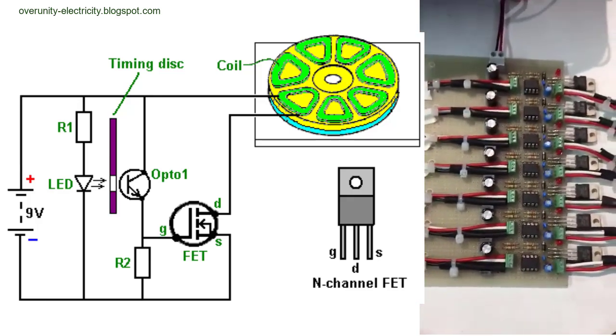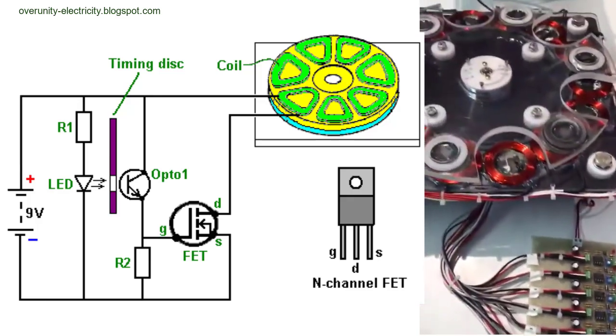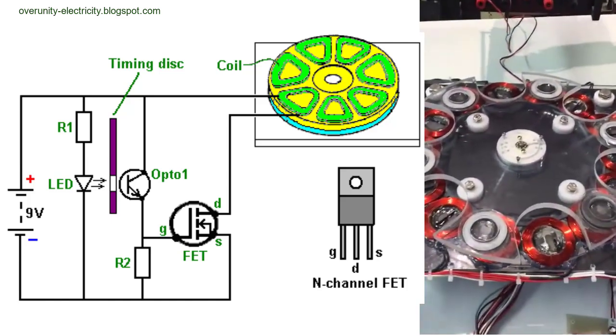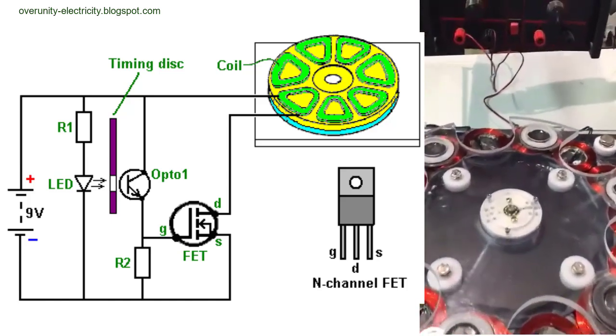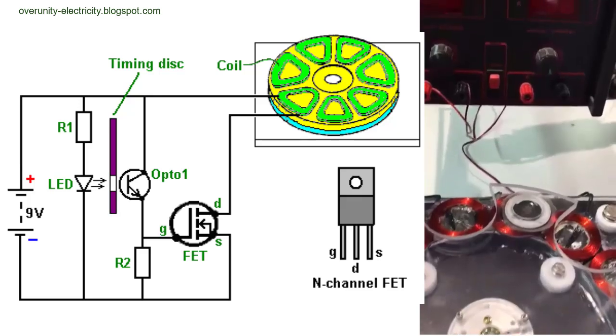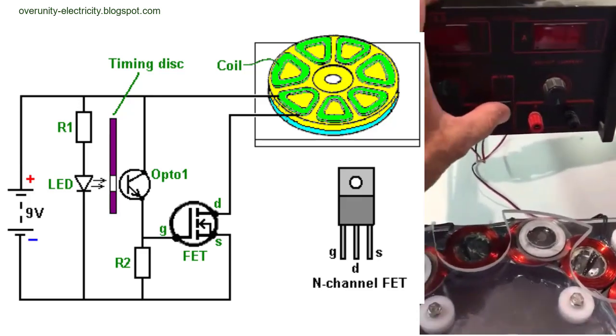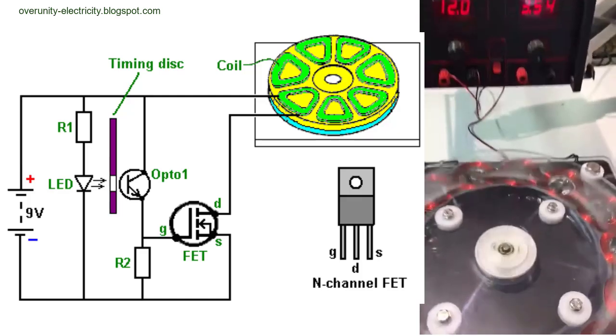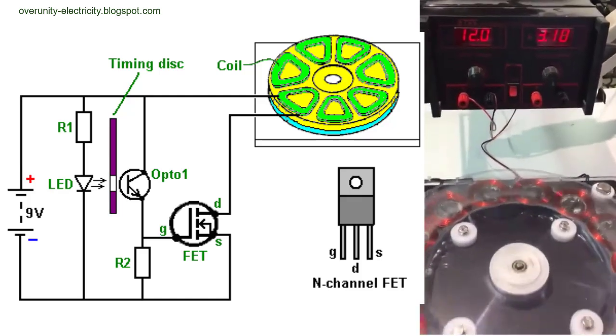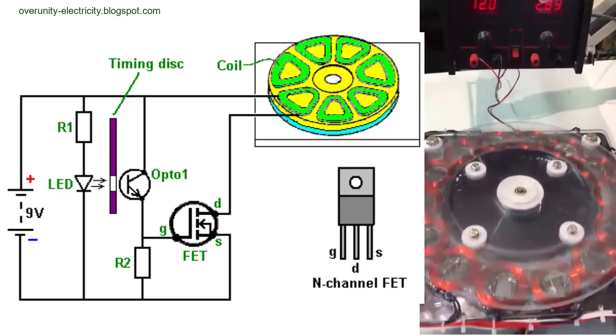This process is common in many electric generators. However, Flynn's design includes a crucial innovation: the utilization of the collapsing magnetic field when the circuit is broken. When the circuit is interrupted, the magnetic field around the coil collapses, generating a high voltage spike. Flynn's device captures this transient voltage, which is then directed to charge a battery bank.